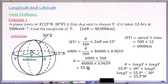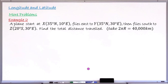Example two: a plane starts at airport X at latitude 35° North, longitude 10° East, and flies due east to airport Y at 35° North, 30° East. From Y, the plane flies due south to airport Z at latitude 20° South, longitude 30° East. The question asks for the total distance traveled by the plane.